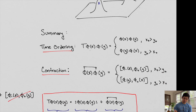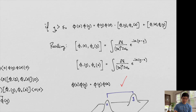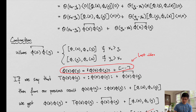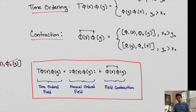In summary: time ordering looks like this — ordering with respect to the space-time point. Contracting is defined by the propagators. The time-ordered field is equal to the normal-ordered field plus the field contraction. You can also think of the field contraction as the difference between the time-ordered and the normal-ordered field. That is time ordering and that is field contraction.